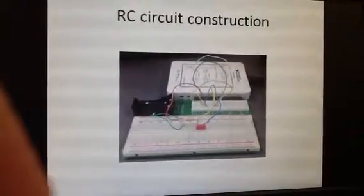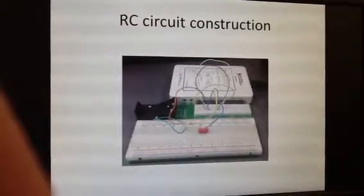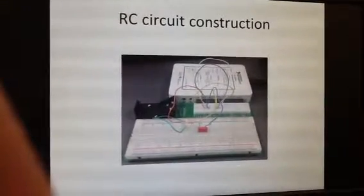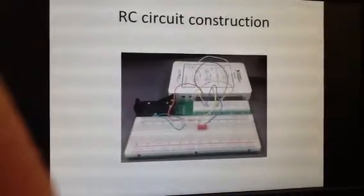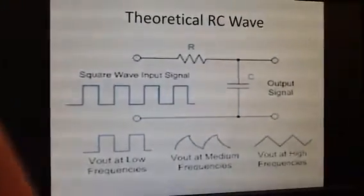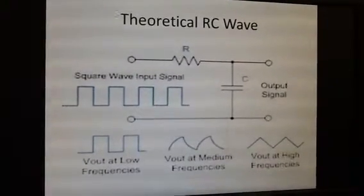RC construction was pretty much the same as our RL circuit. Just replaced the inductor with a capacitor. It's in series. Everything else, every other wire is hooked up the same. Here's theoretically what an RC waveform would look like.